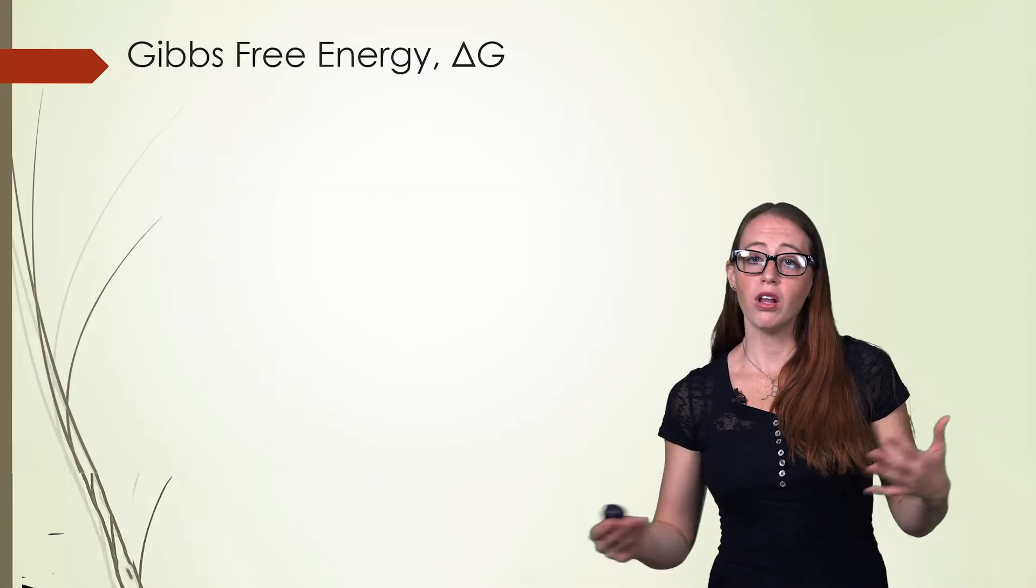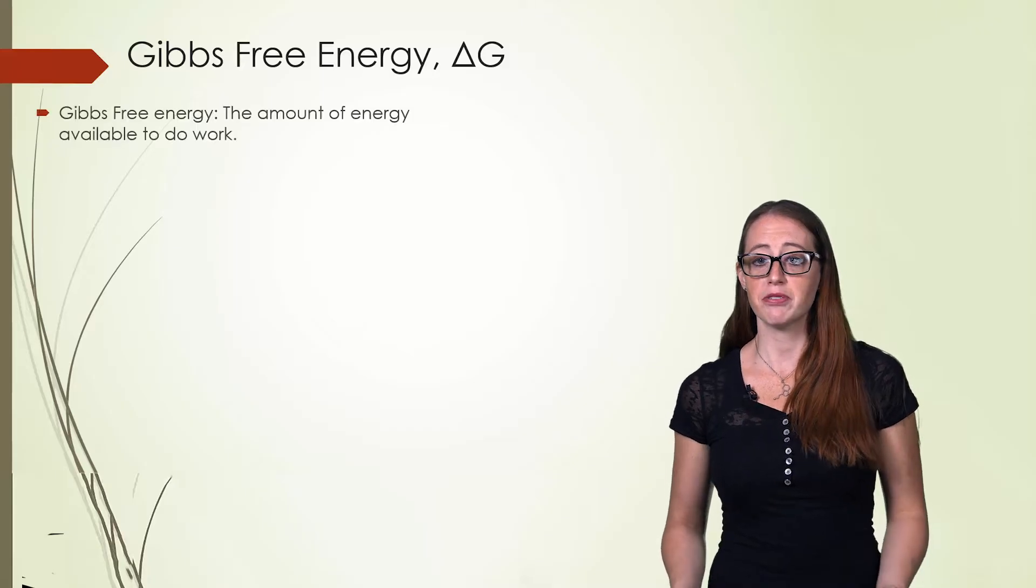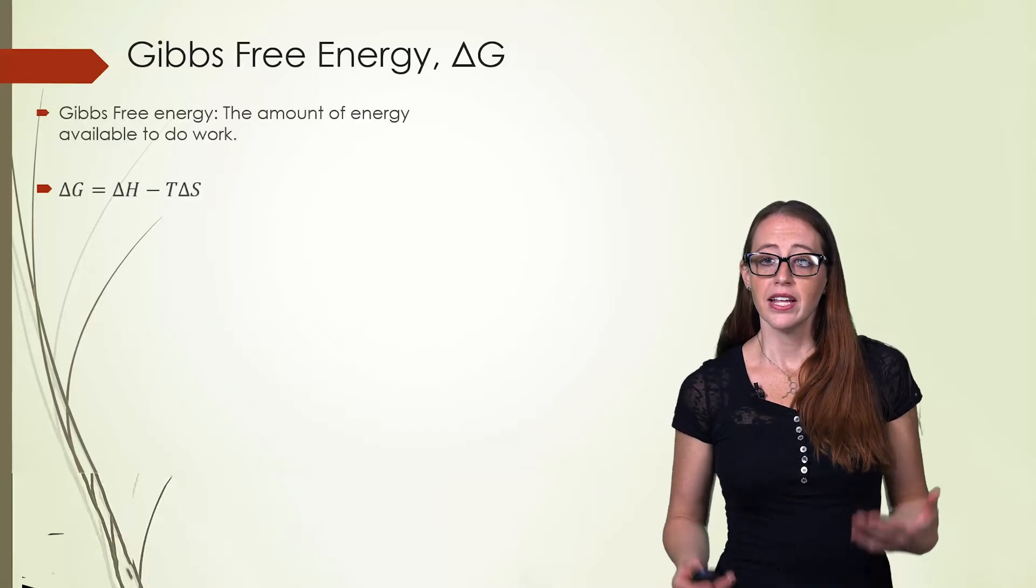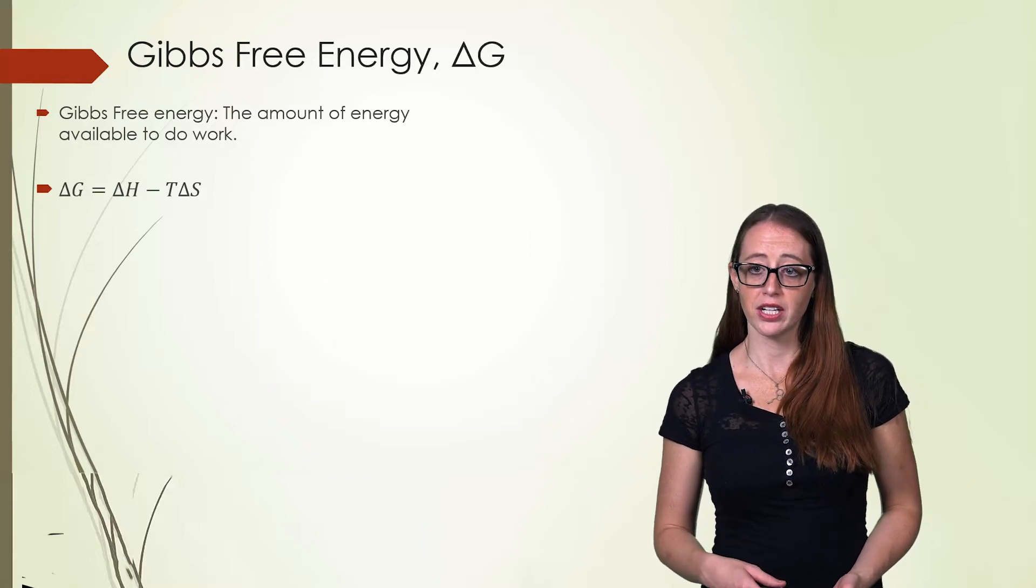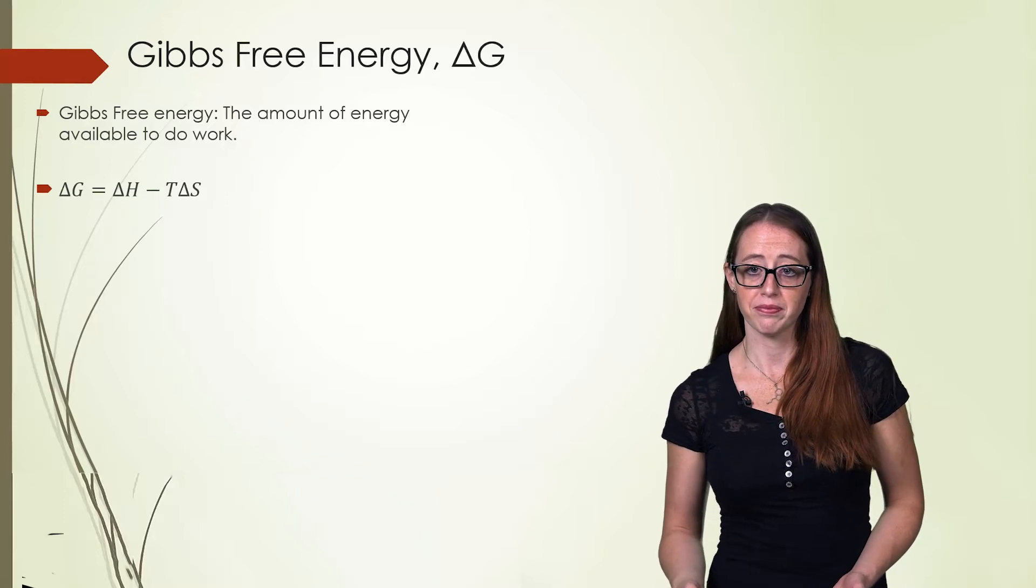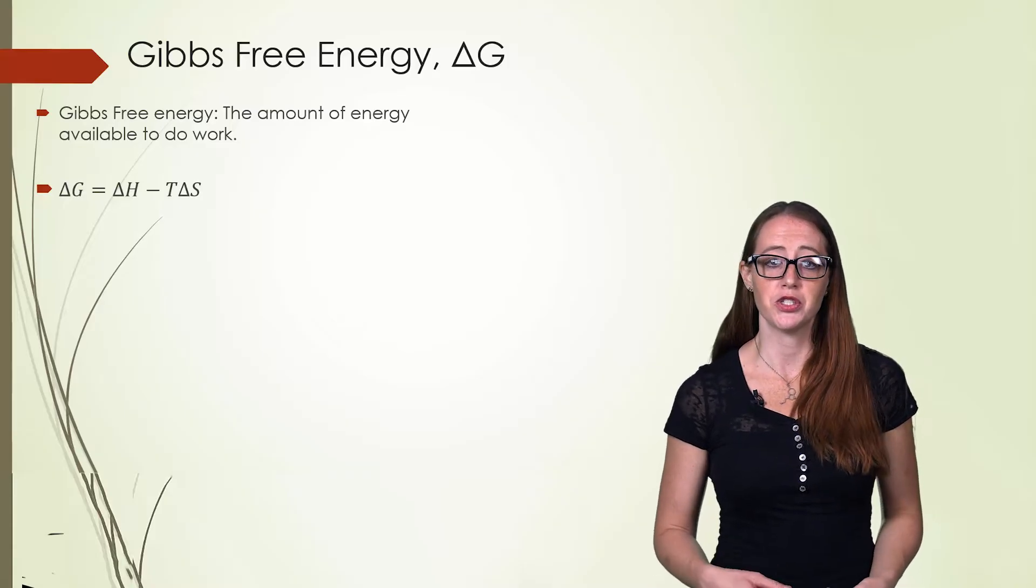If we put all of our previous relationships together, we can get a new term, the Gibbs free energy. This is equal to the change in enthalpy minus the temperature times the change in entropy. This is defined as the amount of energy available to do work.